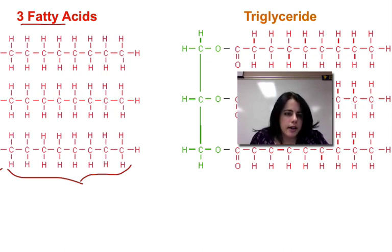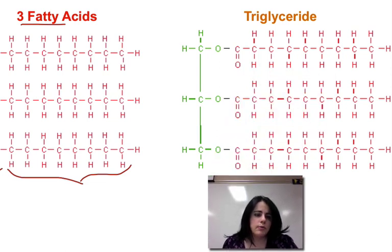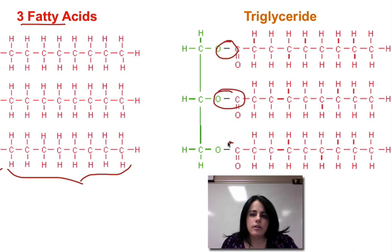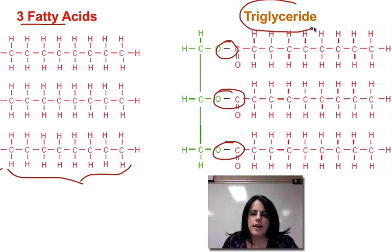To attach them together, we have to remove water — so when we take out a water molecule, we dehydrate it. It's a dehydration synthesis. Once we do that, the oxygen that was left over is now bonded to the carbon, and the three fatty acids are connected to the glycerol. Therefore, it's called a triglyceride.